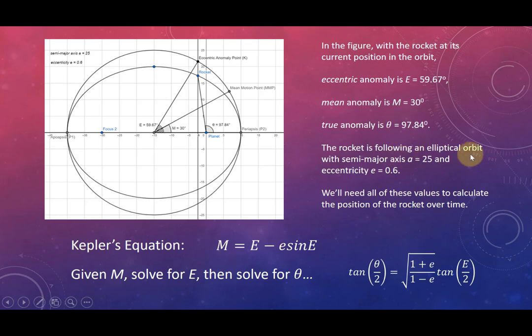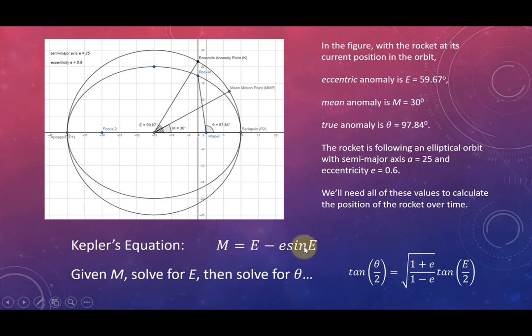In this example, a rocket follows an elliptical orbit with semi-major axis 25 and eccentricity 0.6. We need all these values to locate the rocket over time. In the process, we find M first; once we have M, we solve for big E, the eccentric anomaly. Once we have E, we plug it into the equation to find theta. I thought it helped to put a few things on screen to give an image of the big picture.